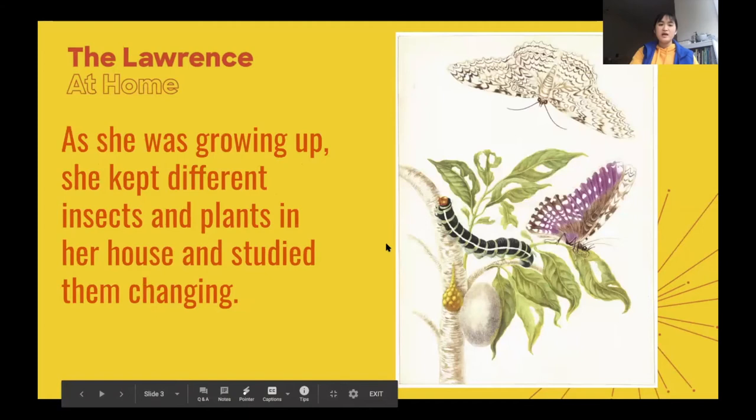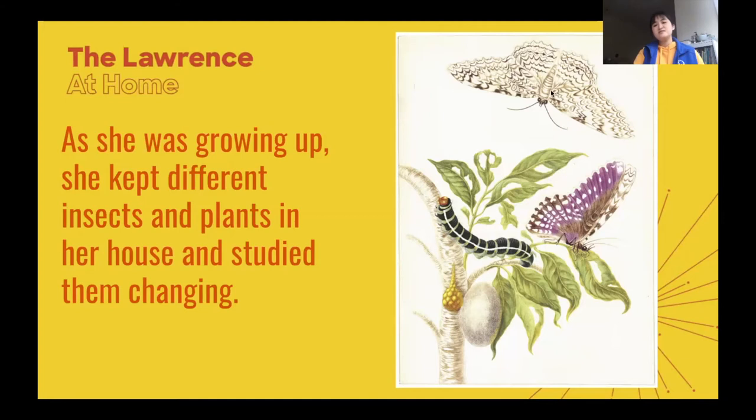As she was growing up, she kept different insects and plants in her house and studied them changing. So she did like to draw pictures of insects and plants. She had different insects that she would keep inside of her house so she could see them up close and draw them in great detail. You can see that she paid a lot of close attention to the details on the wings and all the stripes on this insect. It kind of looks like a photograph — it's really clear and really detailed.